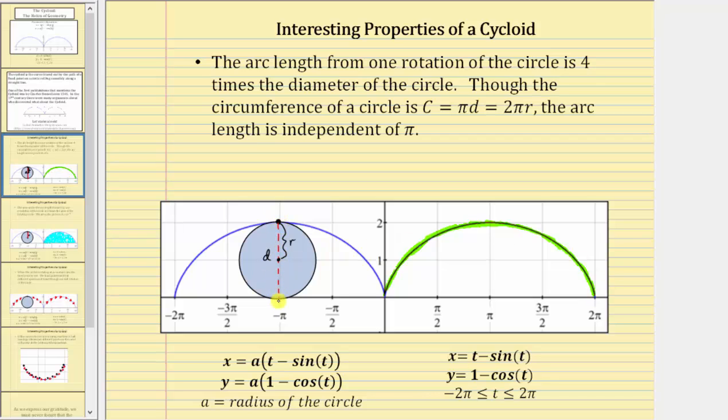Notice how here, the diameter is equal to two units. So the green arc length equals four times the diameter, or in this case, four times two, which is equal to eight units.